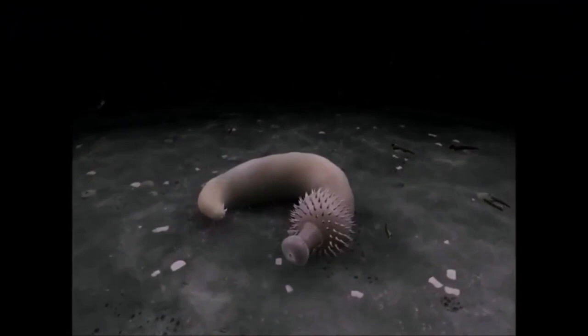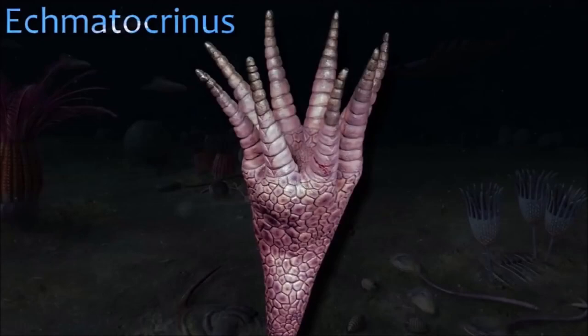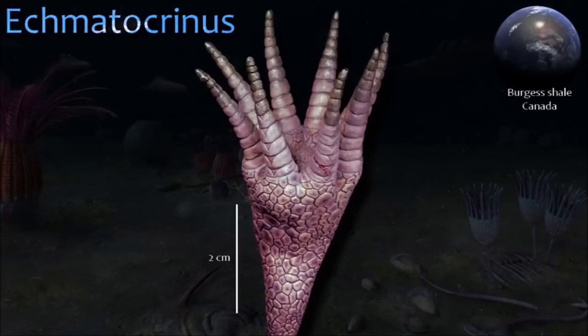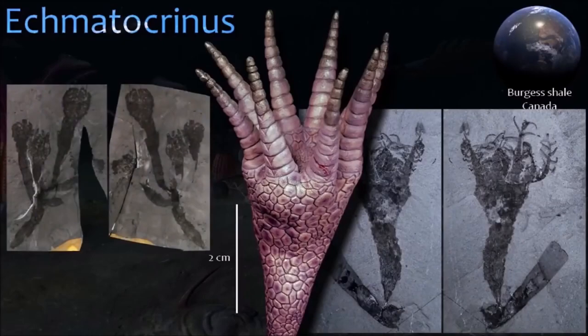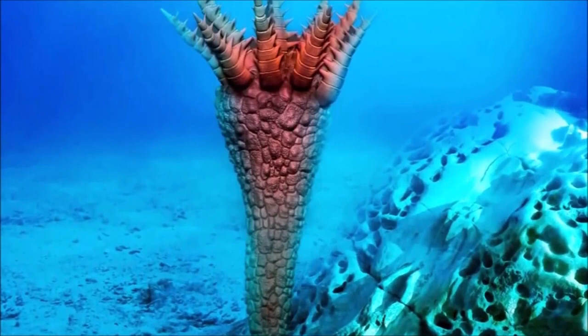Ecmatocrinus is an unusual fossil found only in the Burgess Shale formation in Canada. The surface of its long conical body was covered with thin polygonal plates or scales arranged irregularly, with seven to nine plated arms or tentacles attached to the top of the body, with long thin non-mineralized branches on alternate sides. Ecmatocrinus has been difficult to classify — first thought to be a crinoid, the absence of distinctive echinoderm features such as five-fold symmetry has led to other interpretations, with some paleontologists suggesting it could be an octocoral.